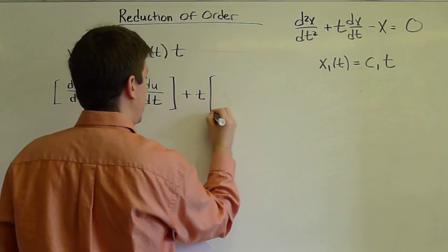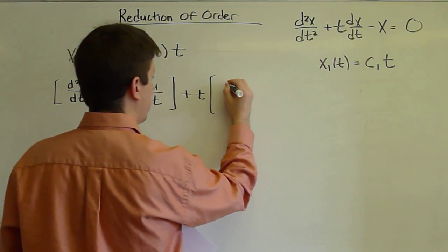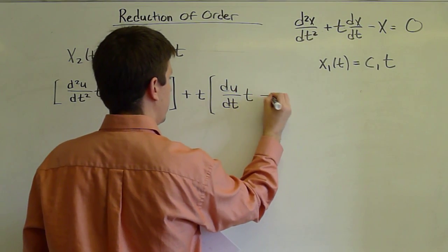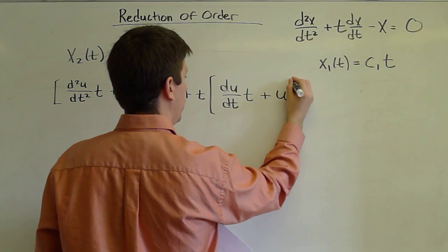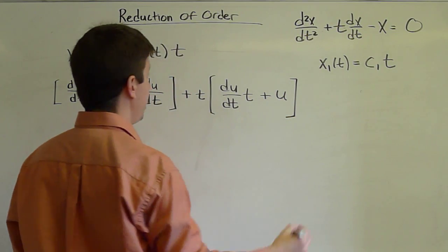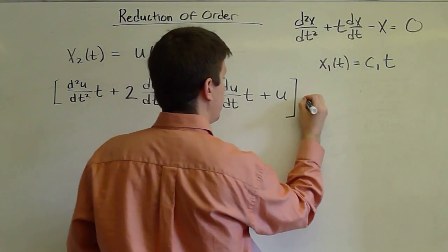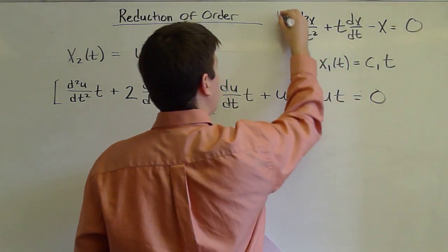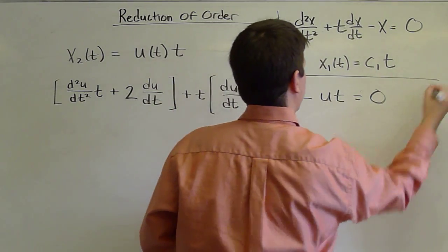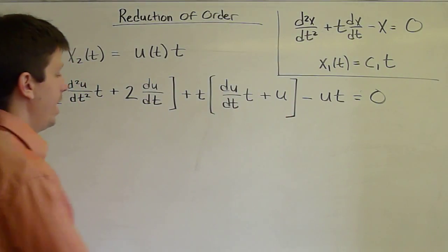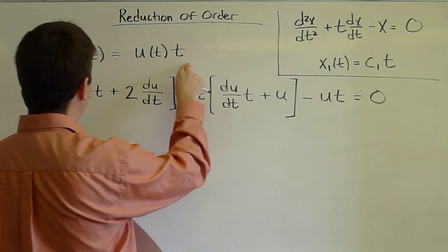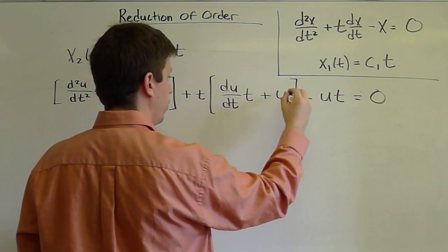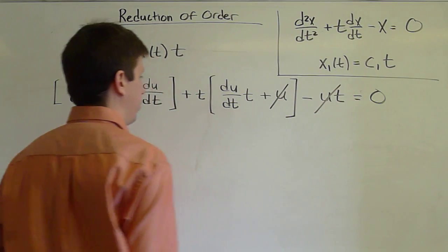Plus t times the first derivative of this product which is du/dt times t plus u times the derivative of t minus the zeroth derivative of this product u times t which must equal zero. So as promised, this form of writing a solution makes some cancellations happen. We have a tu minus a tu. And so this term and that term cancel.